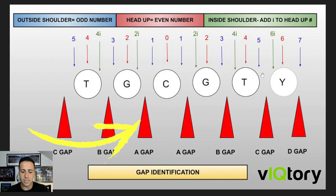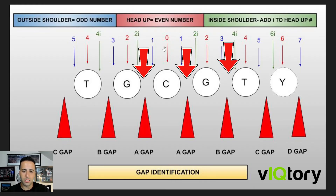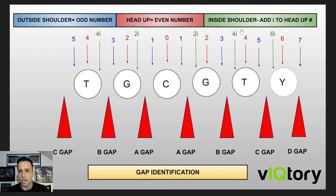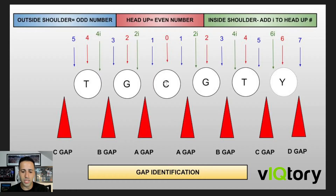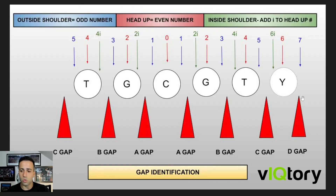Also included in this picture is the gap identification. These are just the spaces between each player. So we have the techniques where the person is aligned on the player — zero tech, 2i, whatever it is for the defender to line up — but these gaps are the spaces in between. The space between the center and guard on both sides is always the A gap. The space between the guard and tackle is always the B gap. The space between the tackle and tight end is always the C gap. And the gap outside of the tight end is the D gap.